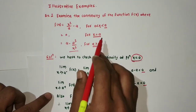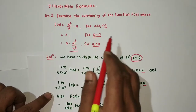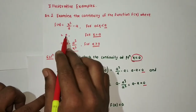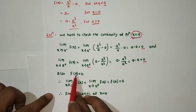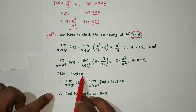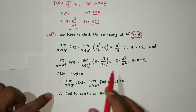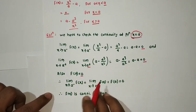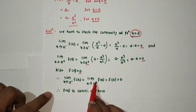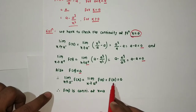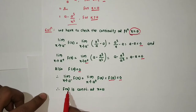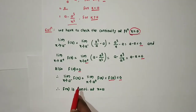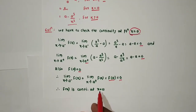And what is f(a)? When x equals a, the functional value is given as 0. So f(a) = 0. From all three: left hand limit = right hand limit = functional value = 0.